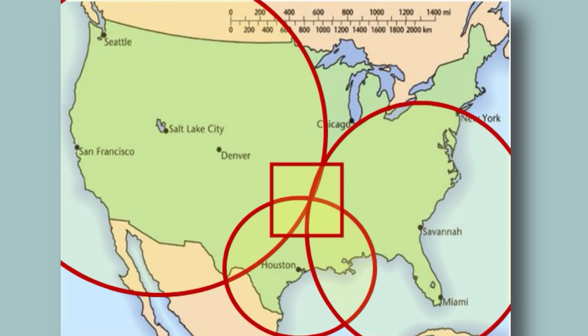We need a minimum of three stations to get an intersection for an accurate location. Two can get us in a general direction, like north or east, but it takes three to get a fairly accurate location.